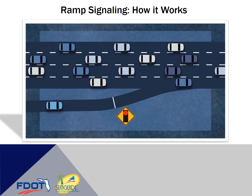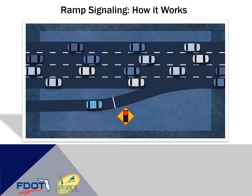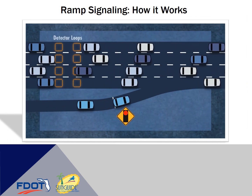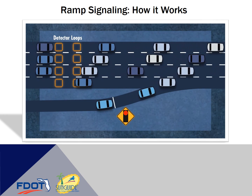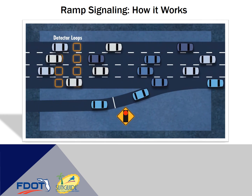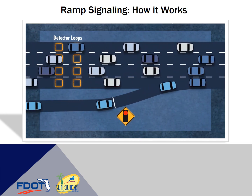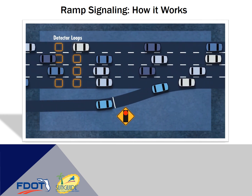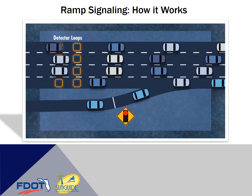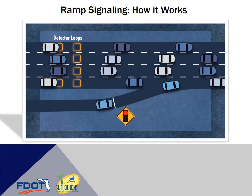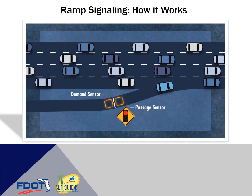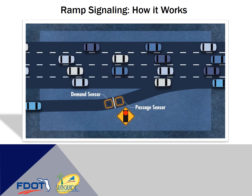In addition to the traffic signal, a typical ramp meter design includes detector loops that feed information to the ramp meter controller, monitor the level of traffic, and detect gaps in the traffic stream. Loops are also installed on the on-ramp to monitor on-ramp traffic.